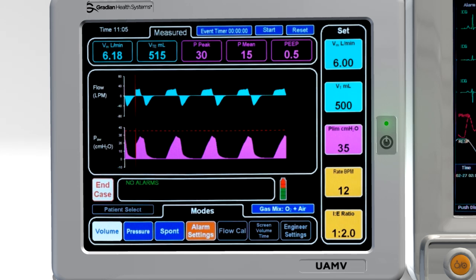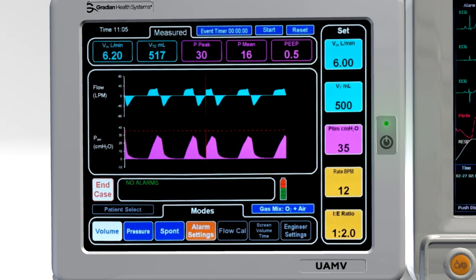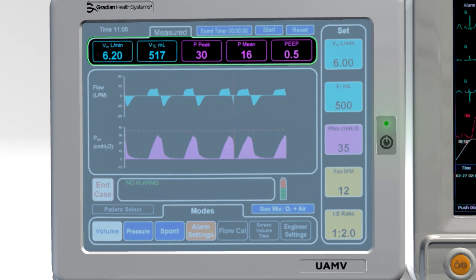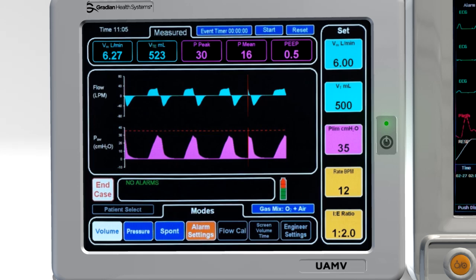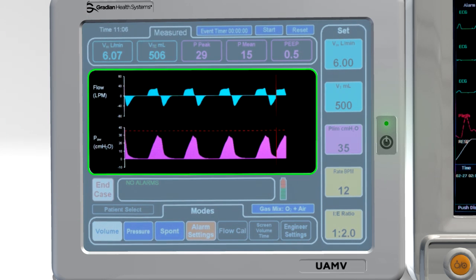Delivery settings are grouped together. Volume, pressure, rate and IE ratio are individually adjustable. Output measurements appear at the top and show volume, pressure and PEEP values. Several graph options are available to plot flow and pressure versus time as well as compliance loops.